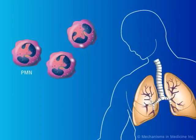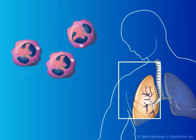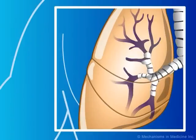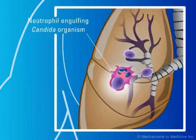Even though Candida species may be found on the skin, they do not have the opportunity to invade because of the physical barrier provided by the skin. However, if an organism has the opportunity to invade the epidermis due to a breakdown in the integumentary physical barrier, then neutrophils play a key role in the defense against these organisms. The neutrophils engulf and phagocytize Candida organisms.